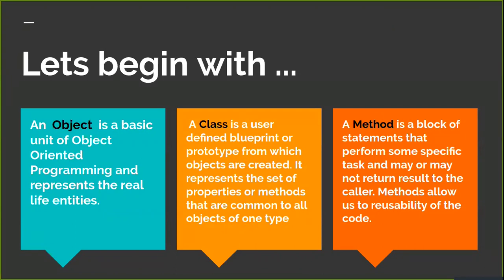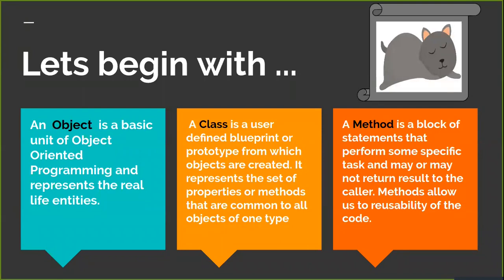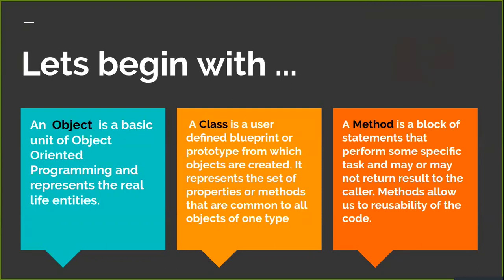A class is a prototype from which objects are created. It represents the set of properties or methods that are common to all the objects of one type — a collection of objects along with the variables and details defined together. For example, a class may be the entire animal category in real life. Just as a dog or cat falls under the same class, similarly a lion or tiger also falls under the same class. All of them — dog, cat, lion, tiger — are unique with their own characteristics, but compiled together in the broader sense we call them animals. So the class is simply like the class 'Animal'.